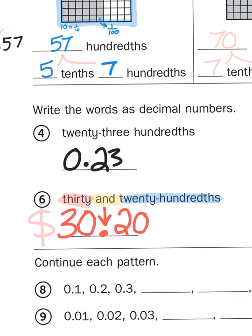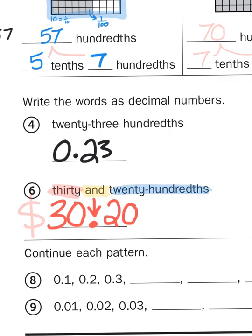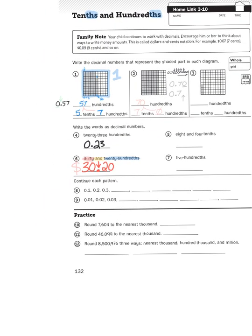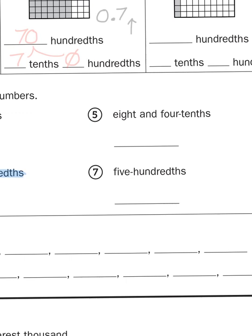Think about this in terms of money: 30 dollars and 20 cents would be 30 whole dollars and 20 cents. We see whole and parts of money all the time — most prices are presented in a mixed number fashion where you have whole dollars and then parts of a whole, otherwise known as cents. So if you see the word AND, you're dealing with whole numbers and fractions. If you don't see AND, you're just dealing with fractions.